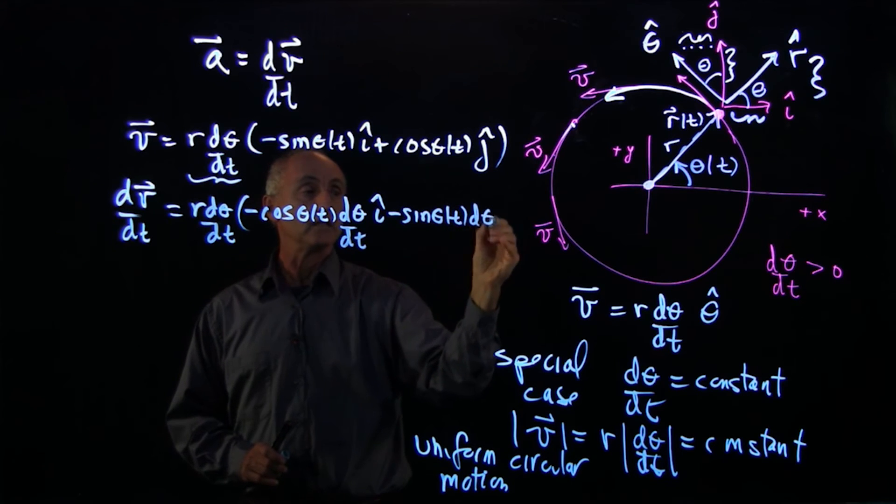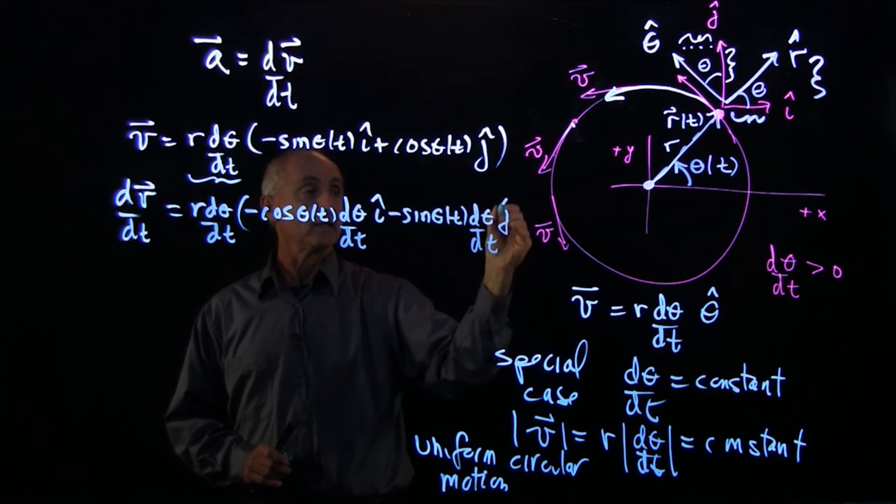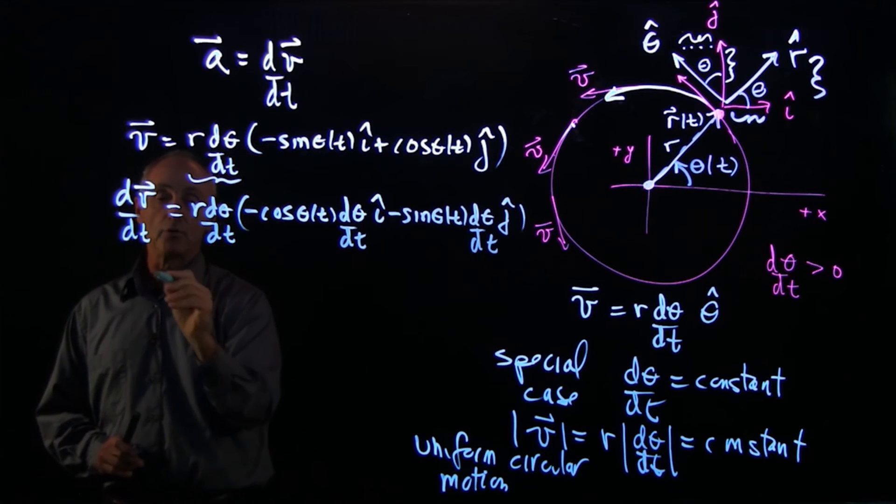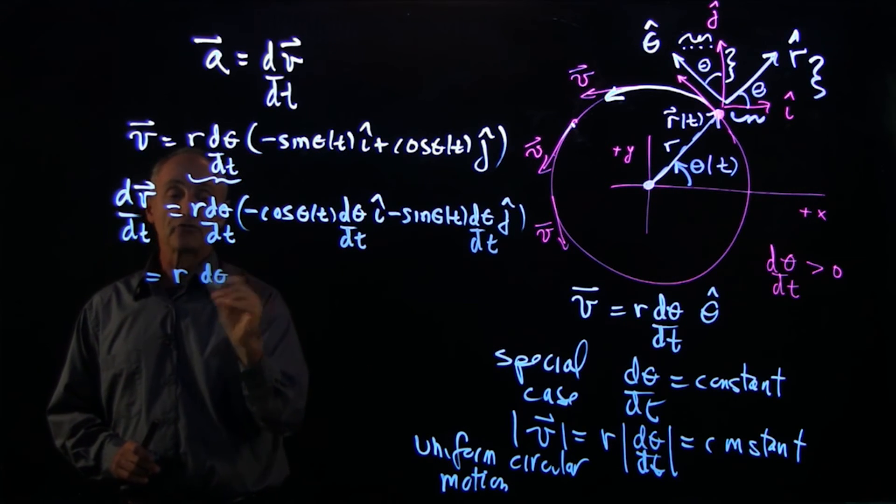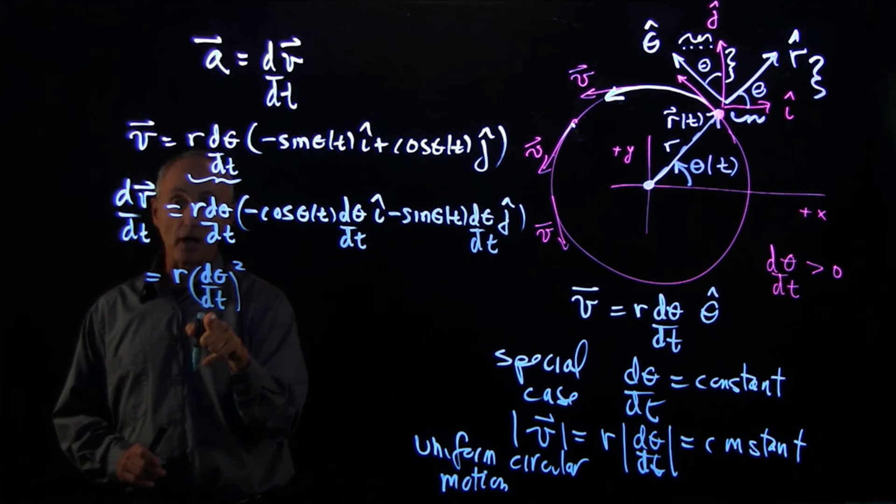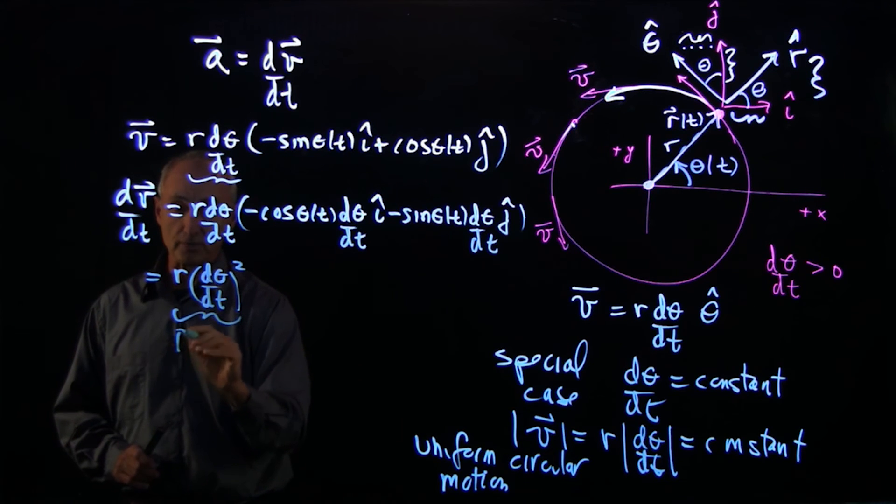Sine of theta dt, d theta dt j hat. And now I have this common d theta dt term, and I can pull it out. And I'll square it. Now, whether d theta dt is positive or negative, the square is always positive. So this quantity is always positive.